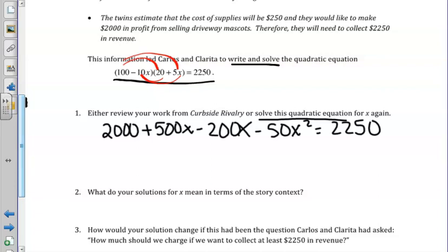If we recall from our previous lesson, we do need to combine like terms and bring over the 2250 so we get zero on one side. When we did that in our prior lesson, we got 50x squared plus 300x minus 250 equals zero.